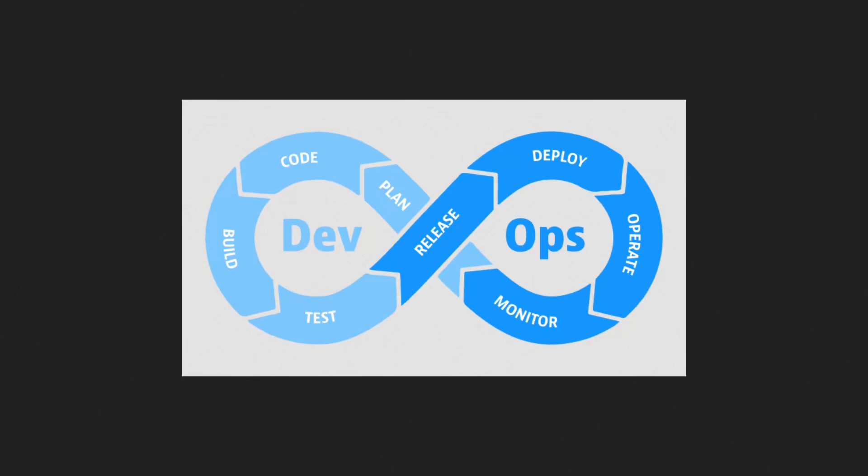A DevOps pipeline is a set of automated processes that basically allows you or your organization to build, test, and deploy software applications quickly and efficiently. It is a way to streamline the development and deployment of the software you're building, with the goal of improving speed and reliability of delivering new features and updates to your users.